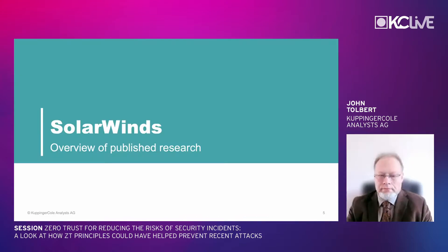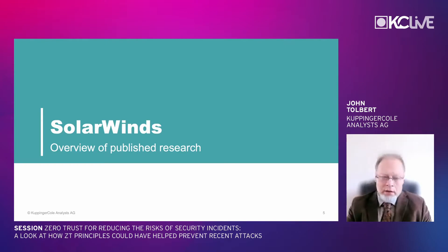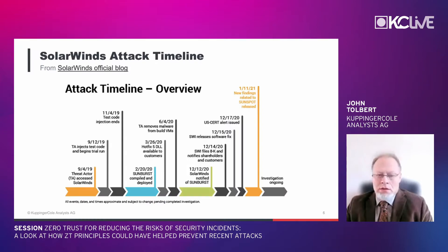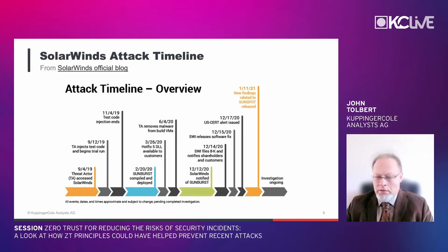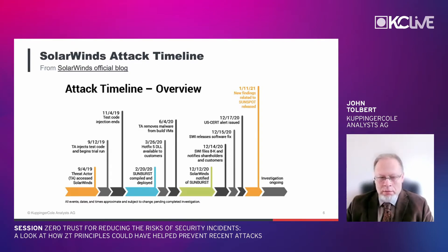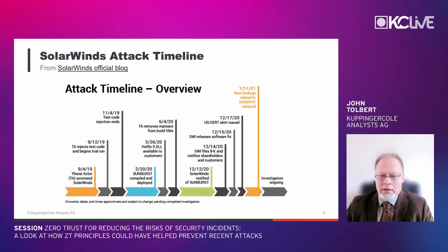A quick overview of what's been published on SolarWinds: this attack has many names — SolarGate and Sunburst. According to a timeline published by SolarWinds themselves, activity started in September 2019 when the threat actor first accessed SolarWinds' build environment. This was a very methodical campaign — they built the code, tested it, ensured it was always present in builds and had configuration control over it. Sophisticated is not an overstatement here.